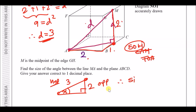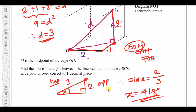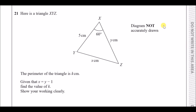So sine of the angle equals opposite over hypotenuse, which is two over three. Inverse sine of that gives us 41.8 degrees. That's it — all done.